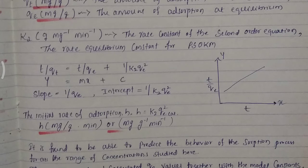The initial rate of adsorption is calculated by the formula h = k2·qe². The unit will be milligrams per gram per minute or milligrams per gram minute⁻¹.